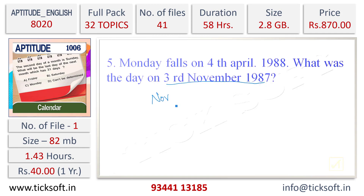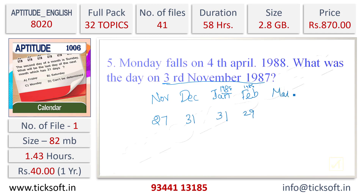In November, there are 30 days total, and we exclude the first 3 days, leaving 27 days. In December we have 31 days, in January 1988 we have 31 days, in February 1988 we have 29 days because 1988 is a leap year, in March we have 31 days, and in April we count only 4 days, up to 4th April.